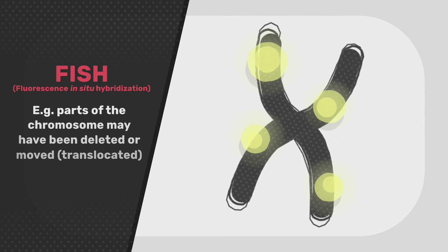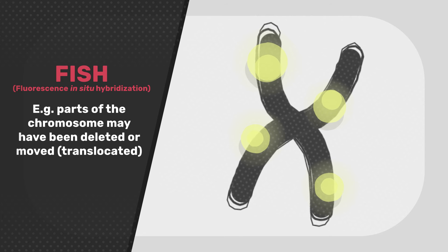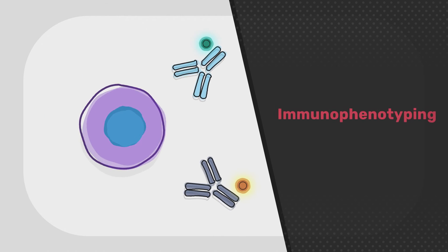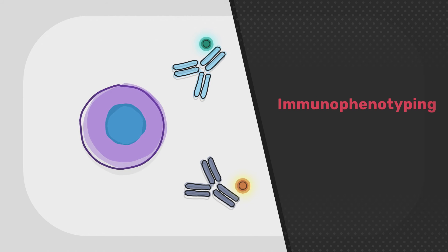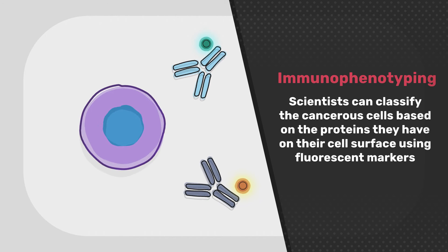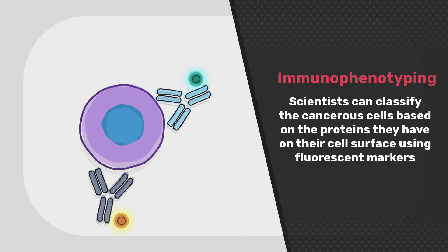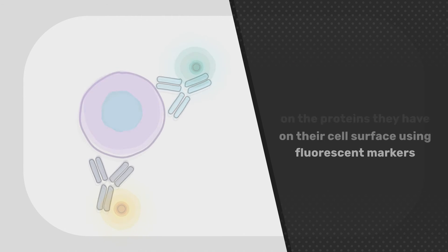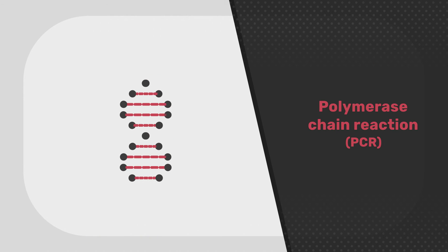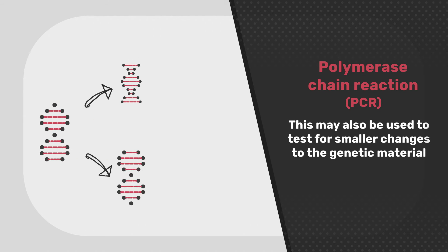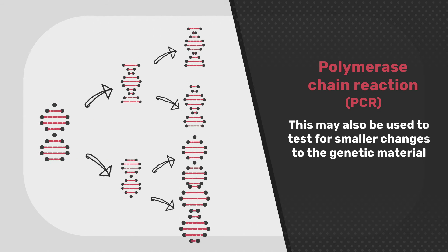For example, parts of the chromosome may have been deleted or moved, translocated. Immunophenotyping allows scientists to classify the cancerous cells based on the proteins they have on their cell surface using fluorescent markers. Polymerase chain reaction, PCR, may also be used to test for smaller changes to the genetic material.